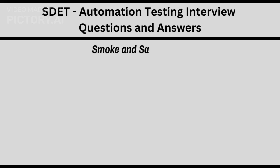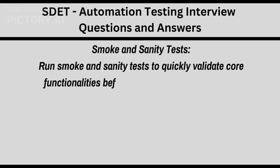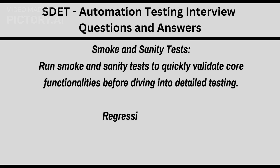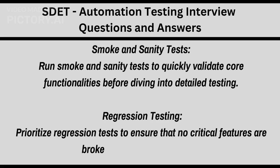Smoke and Sanity tests: run Smoke and Sanity tests to quickly validate core functionalities before diving into detailed testing. Regression testing: prioritize regression tests to ensure that no critical features are broken due to recent updates.